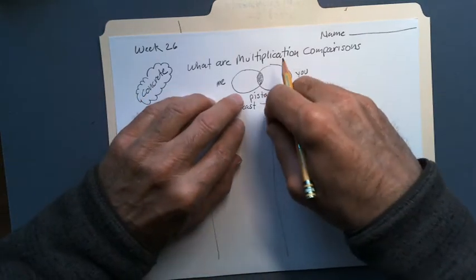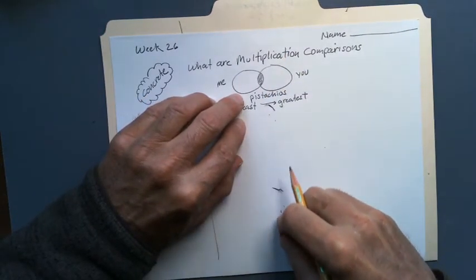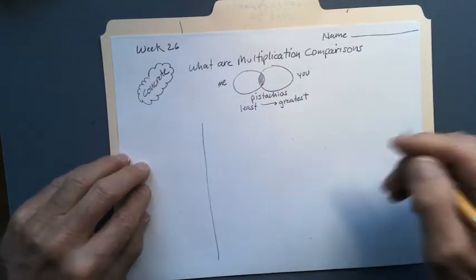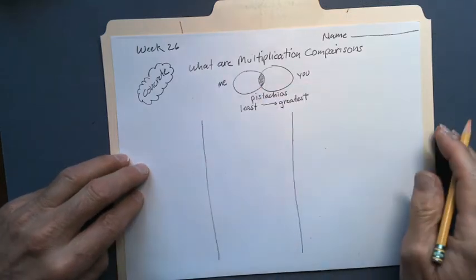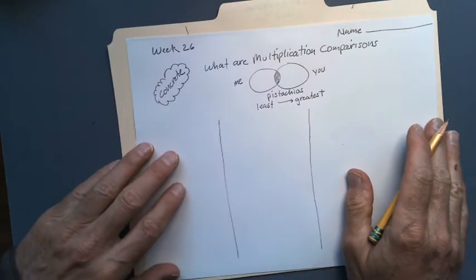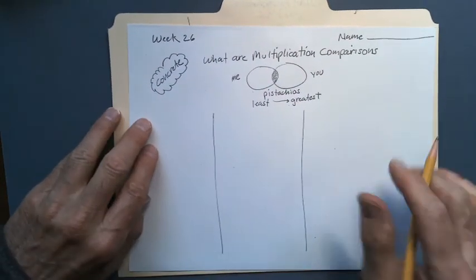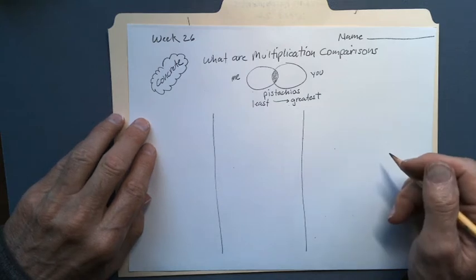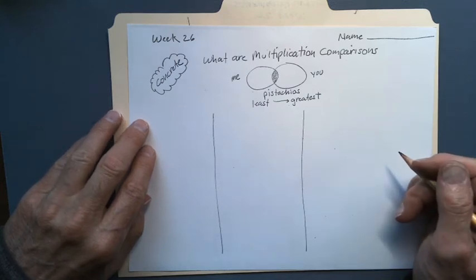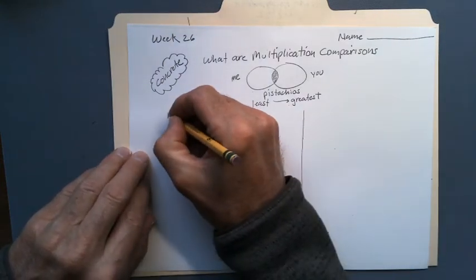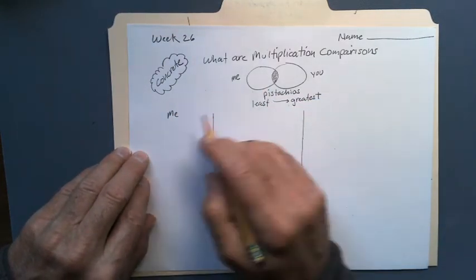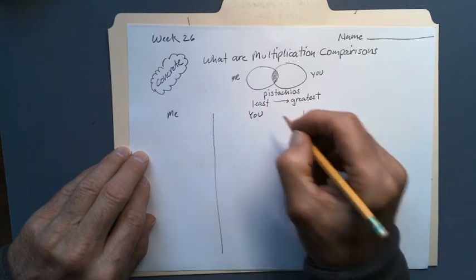Let's see — you're going to have more, so let me make this a little bit larger. I want you to go ahead and follow along, but maybe you're going to use something different than pistachios. Maybe you'll use M&Ms, Skittles, little rocks outside — pick something small, anything around the house. This is going to be me and this is going to be you over here.